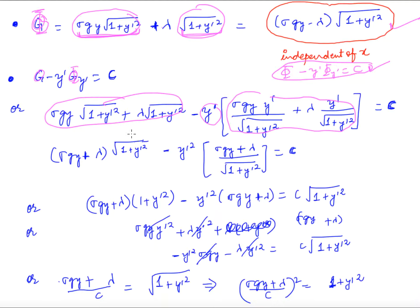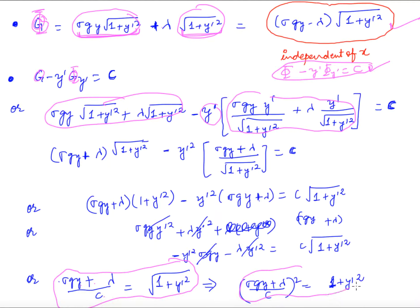Substituting Φ and performing the algebraic manipulations — taking the LCM and simplifying — we arrive at: (sigma·g·y + λ)/c = sqrt(1 + y'²). Squaring both sides gives the next step in the solution.